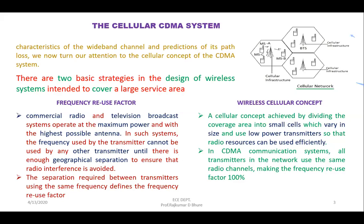The second strategy is the wireless cellular concept. This is achieved by dividing the whole coverage area into small cells, as shown in the diagram. The whole geographical area is divided into small cells which vary in size, and because they are small, they require low power transmitters or small antennas so that radio resources can be used effectively.